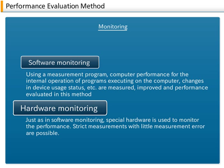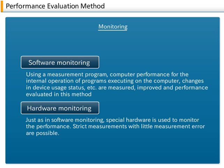Hardware Monitoring: Just as in software monitoring, special hardware is used to monitor the performance. Strict measurements with little measurement error are possible. Typical items to be measured are the hit ratio of cache memory and the usage frequency of branch instructions.